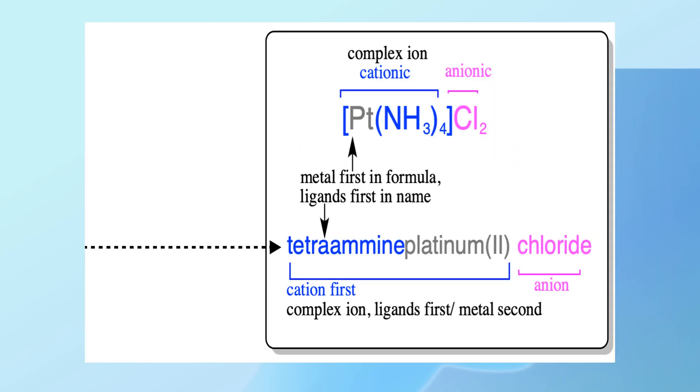Coordination compounds have a specific naming system that indicates the type and number of ligands, as well as the oxidation state of the metal center.